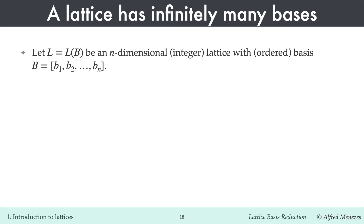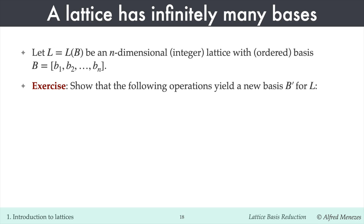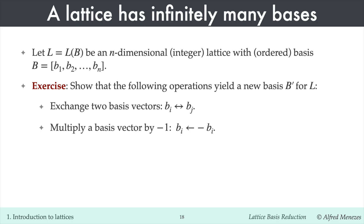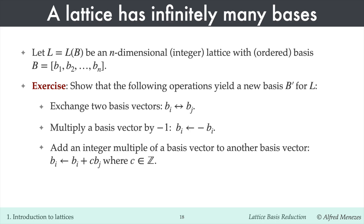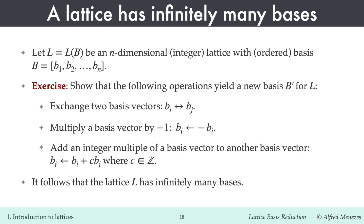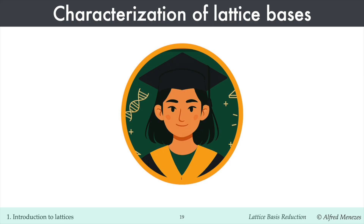Given an ordered basis B for a lattice L, one can get new ordered bases for L by repeatedly performing the following operations: swap two basis vectors; multiply a basis vector by minus 1; or add an integer multiple of one basis vector to another. These operations demonstrate that a lattice has infinitely many bases. Some bases are nicer than others, and this distinction is one reason why lattices are useful in public key cryptography. A bad basis for a lattice can serve as a public key, whereas a good basis can serve as the corresponding private key. The security comes from the hope that recovering the good basis from the bad one is a computationally difficult problem.